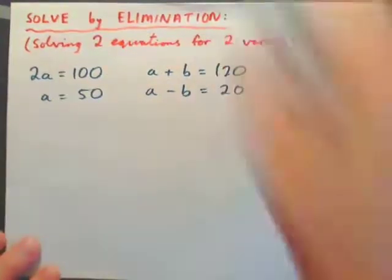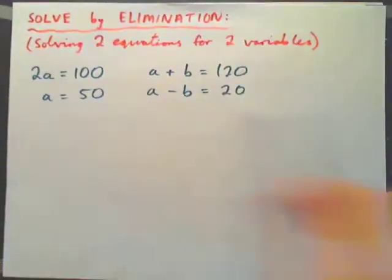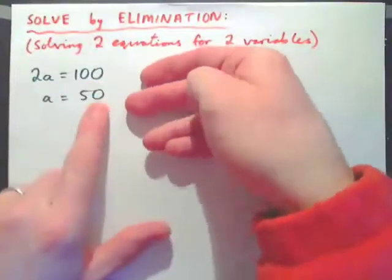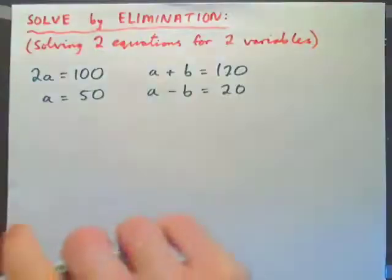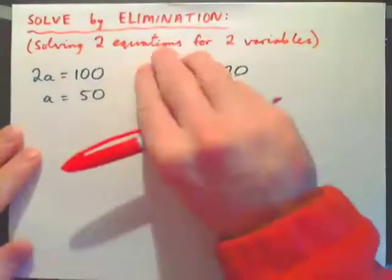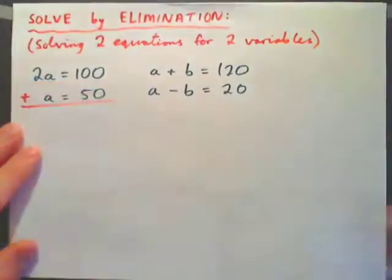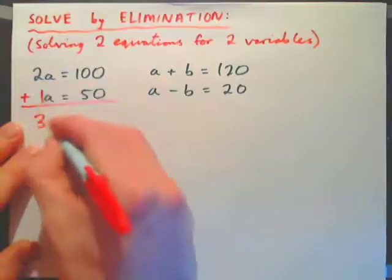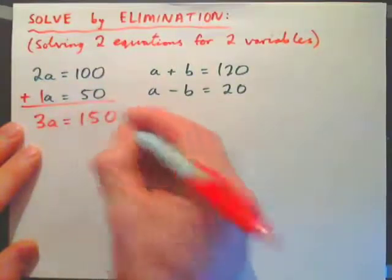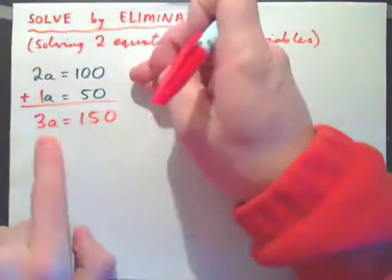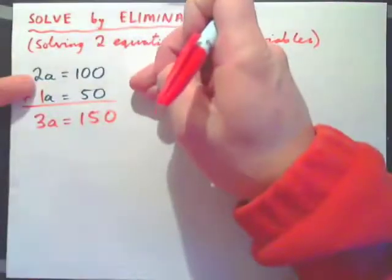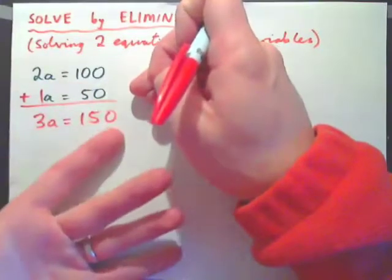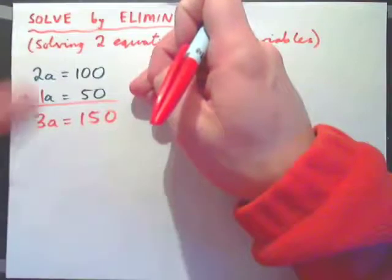First of all, we have one new concept to explore. Two apples cost 100 cents, one dollar; one apple costs 50 cents. What we can do with these two equations is add them together. If I add these two equations together, two apples plus one apple gives three apples, and 100 plus 50 gives 150.